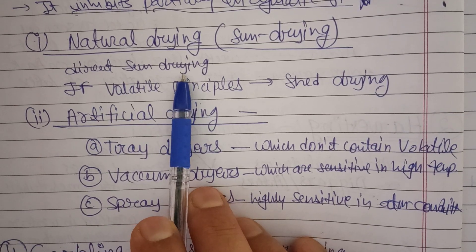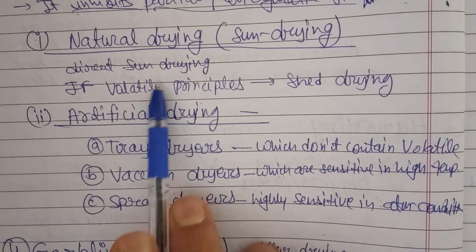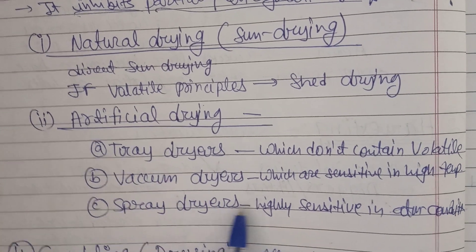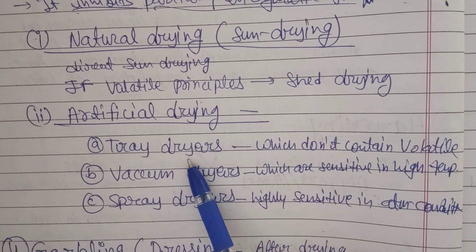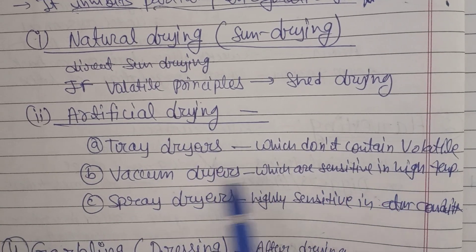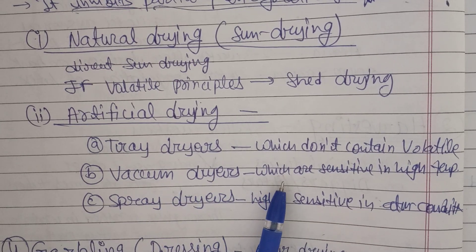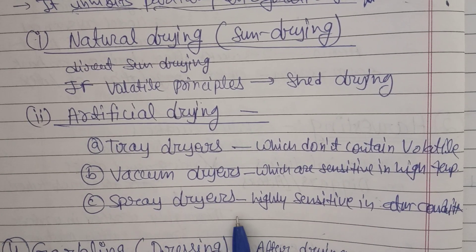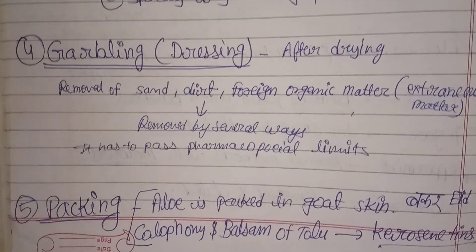Drying makes the drug resistant to microbial growth, especially fungi, and inhibits partial enzymatic reactions that would degrade the crude drug. There are two types of drying: natural drying and artificial drying. Natural drying includes direct sun drying. However, if the drug contains volatile principles, shade drying must be done, otherwise the volatile oils will evaporate.